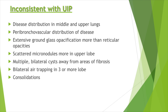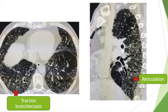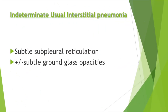If any of those features are present, we are not looking at UIP. In probable UIP, the most important distinction is there is no honeycombing, but we get subpleural and basal reticulation with or without ground glass opacities, peripheral traction bronchiectasis, and no findings inconsistent with UIP pattern.